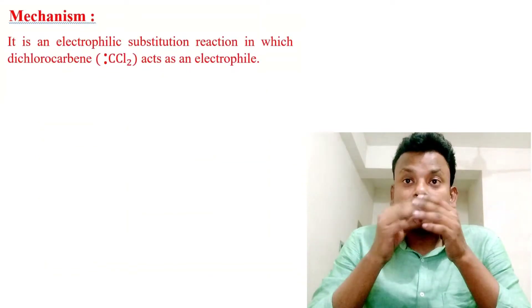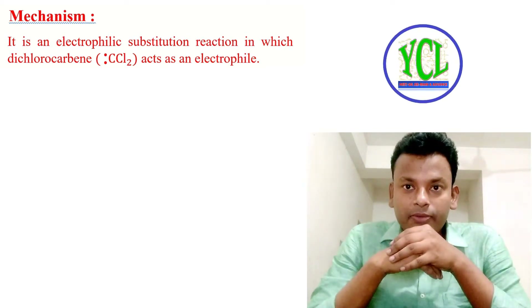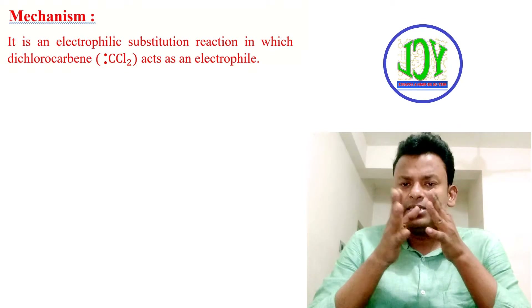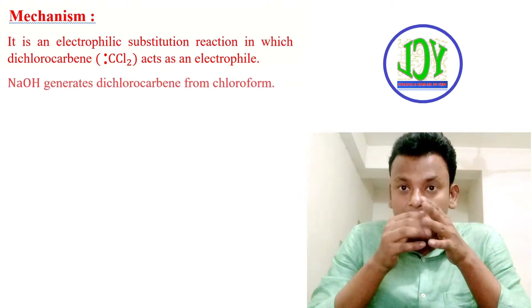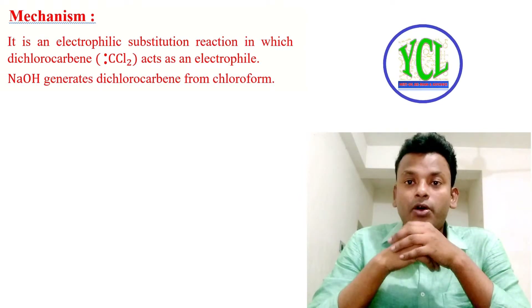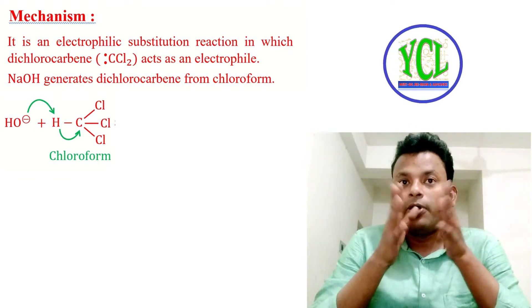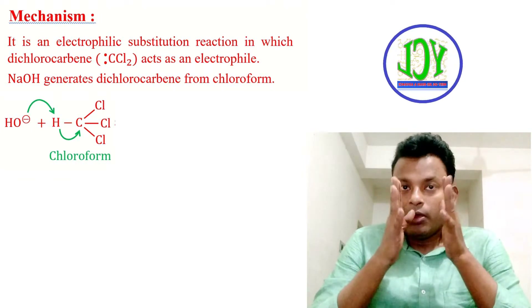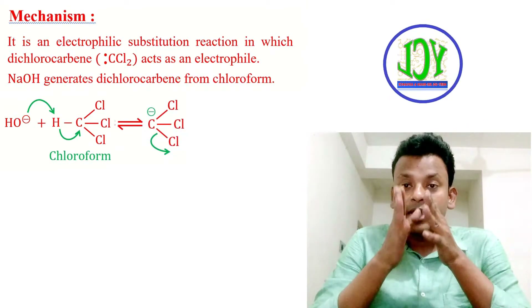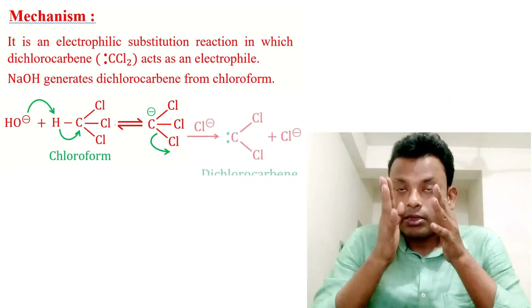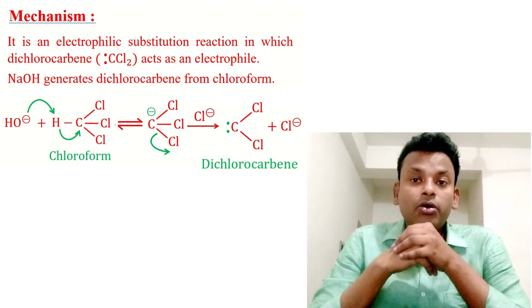Mechanism: it is an electrophilic substitution reaction in which dichlorocarbene, that is CCl2, acts as an electrophile. NaOH generates the dichlorocarbene from chloroform. The OH negative ion — which is the base — accepts a proton from chloroform, and then Cl negative is removed from that compound to give dichlorocarbene.